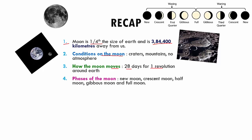We studied about the different phases of the moon. The phases are new moon, crescent moon, half moon, gibbous moon, and finally full moon, which takes 14 days. The next 14 days of the phases of the moon are in reverse order, starting from the full moon and ending in the new moon.